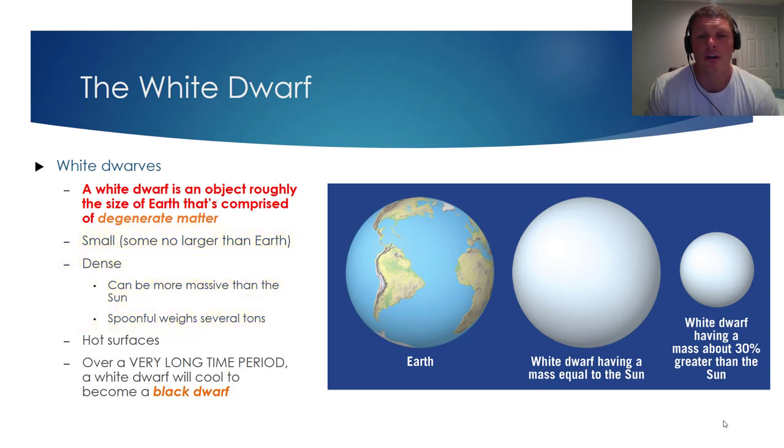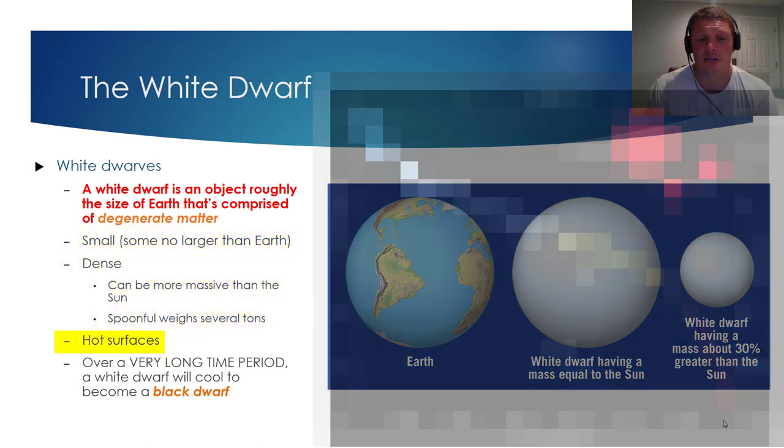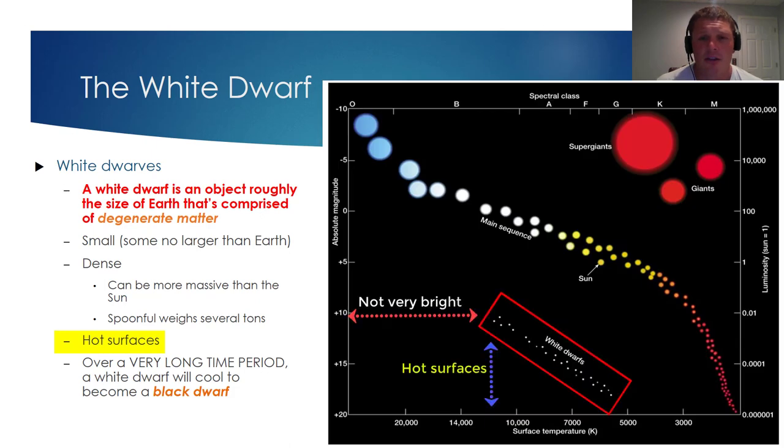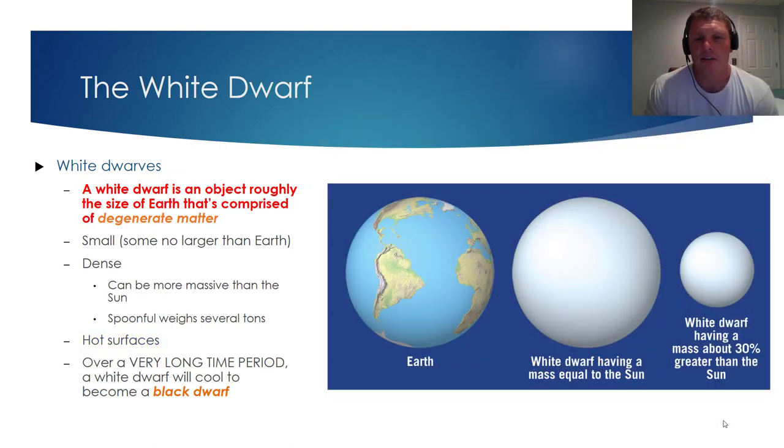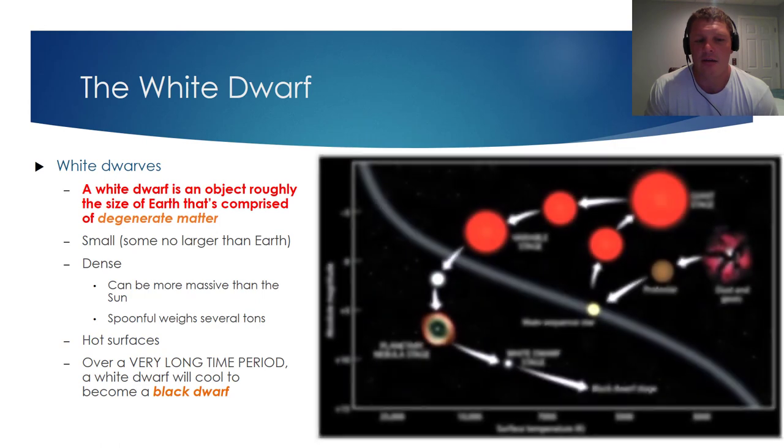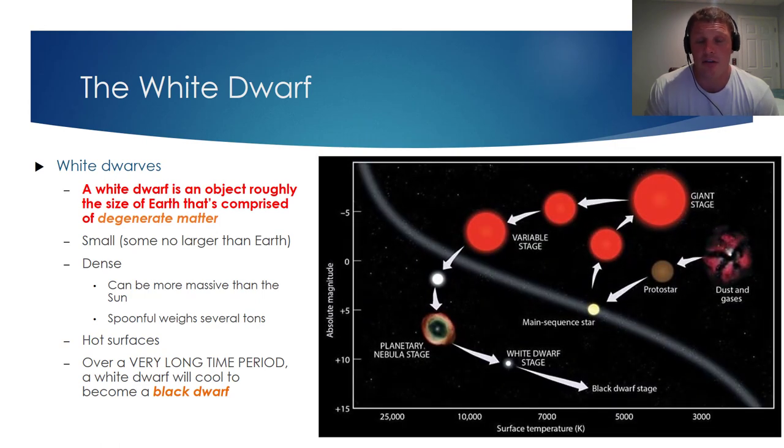A white dwarf will also tend to have a very hot surface. And if you look at a Hertzsprung-Russell diagram, you'll probably notice that white dwarfs aren't very luminous. In fact, white dwarfs will tend to be found in the lower left center region of Hertzsprung-Russell diagrams. I'd like to tell you that the white dwarf is the final stage in stellar death, but over a very long period of time, a white dwarf will cool and become a black dwarf.